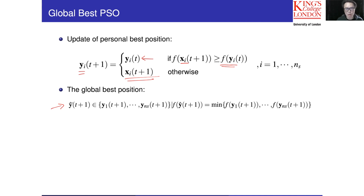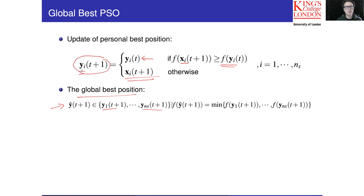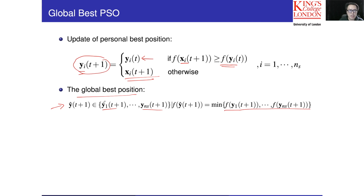We then update the global best position. The global best is the best of all personal best positions. Mathematically, y-hat(t+1) will be one of the personal bests. After updating each y_i, we pick the y_i that gives the smallest cost. For example, if y1 has the smallest cost, then y-hat(t+1) equals y1. In English: we pick the best personal best position from the updated set — the one giving minimum cost for minimization.